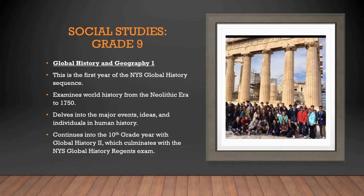Starting in ninth grade, you have the option of taking one of two Global Nine classes. The first is Global History and Geography I, which is the first year of the two-year sequence. It starts with the Neolithic period — when people learned to farm — all the way up to 1750, right around the time of the French Revolution. We will dive into many major events and ideas, human interactions with their geography, and begin building skills like analysis, critical thinking, and comparing and contrasting, which will carry you through the next four years of your history courses.